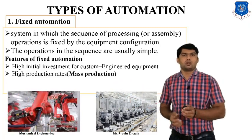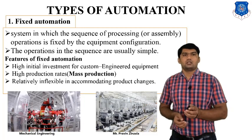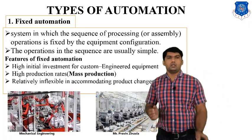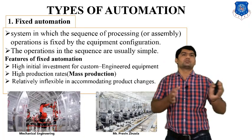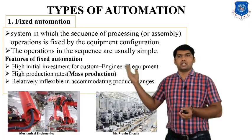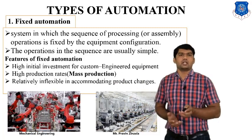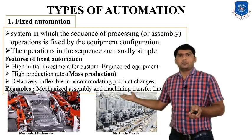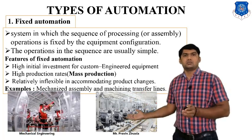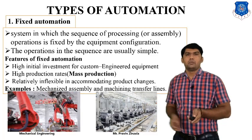Fixed automation is generally used for mass production. It is relatively inflexible with respect to product changes — we cannot change the product. For example, in car production, we must produce the same model with the same dimensions; we cannot change the dimensions or outer diameter of the car using fixed automation. The output quantity remains fixed throughout production. An example of fixed automation is a mechanized assembly or machining transfer line.